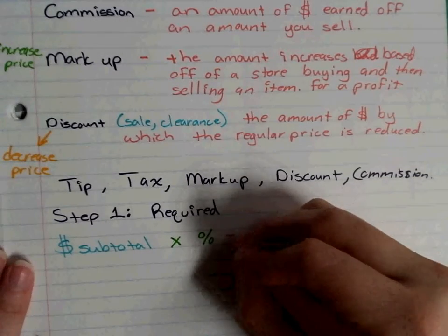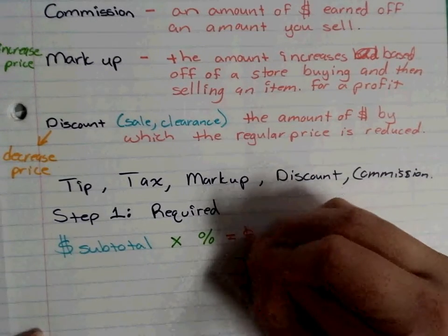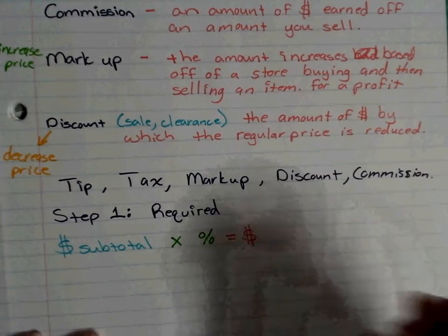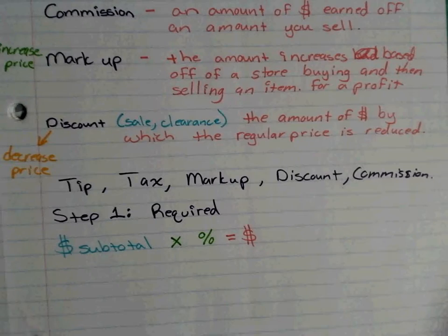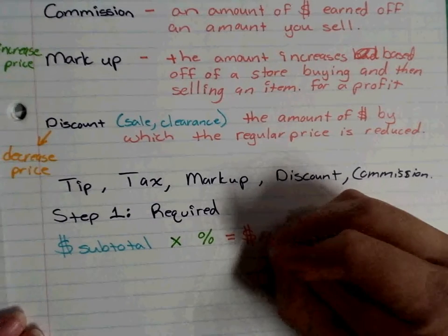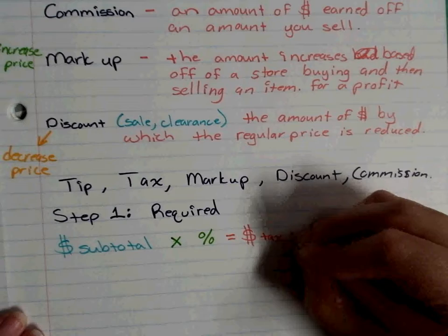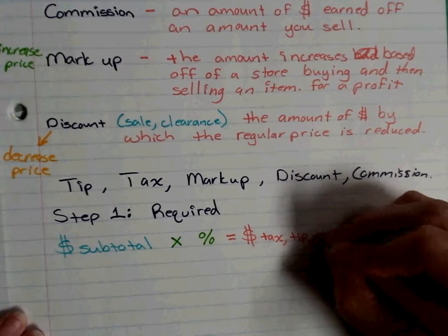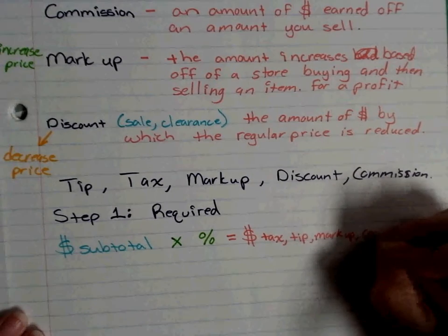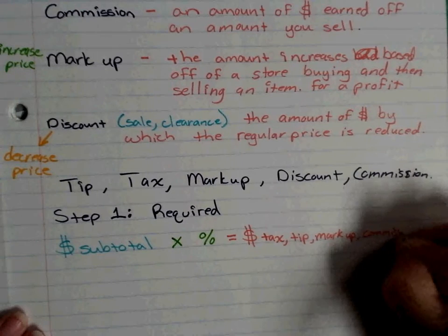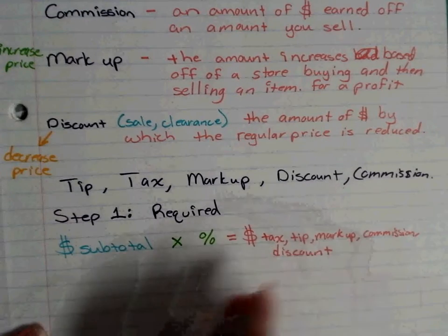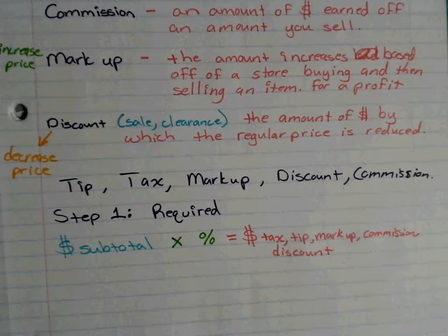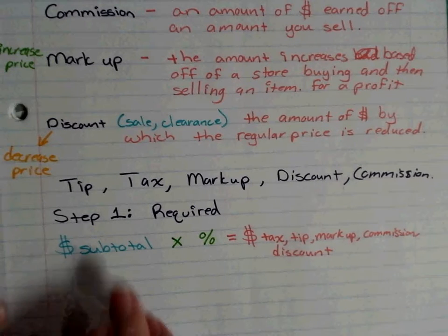When you take the subtotal and multiply it by the percent, that equals the money version of whatever your tax, tip, markup, commission, or discount is. Six percent is not the same as six dollars — this calculation gives you the money version.